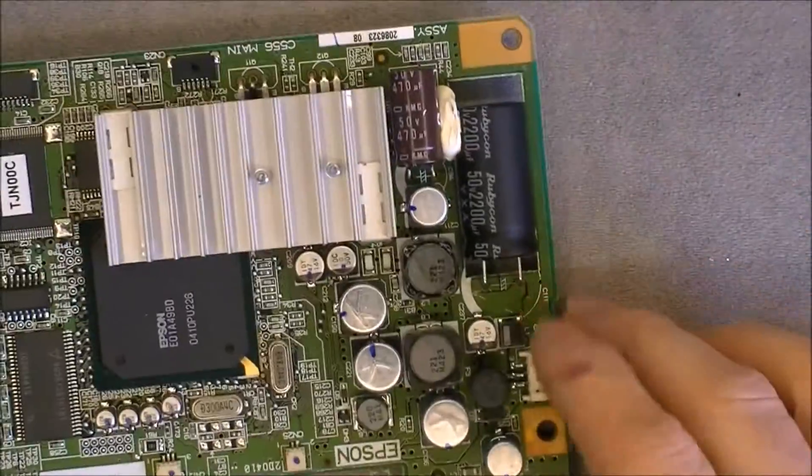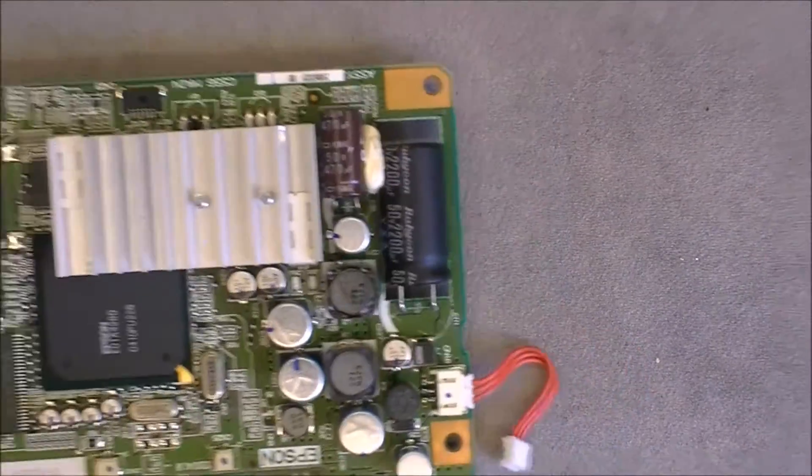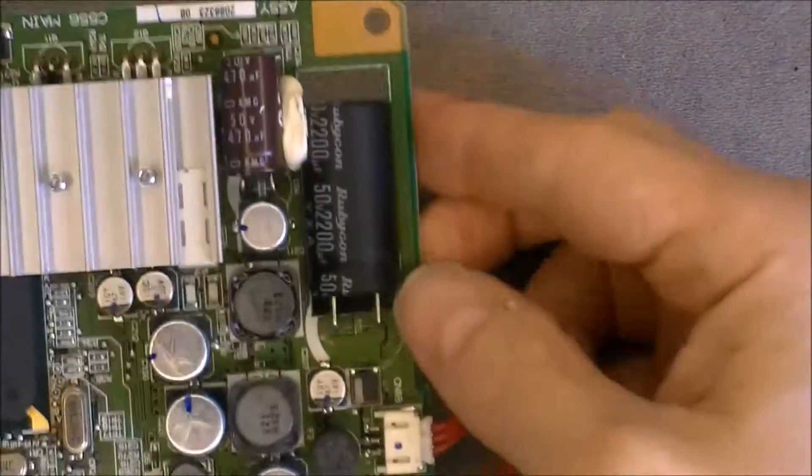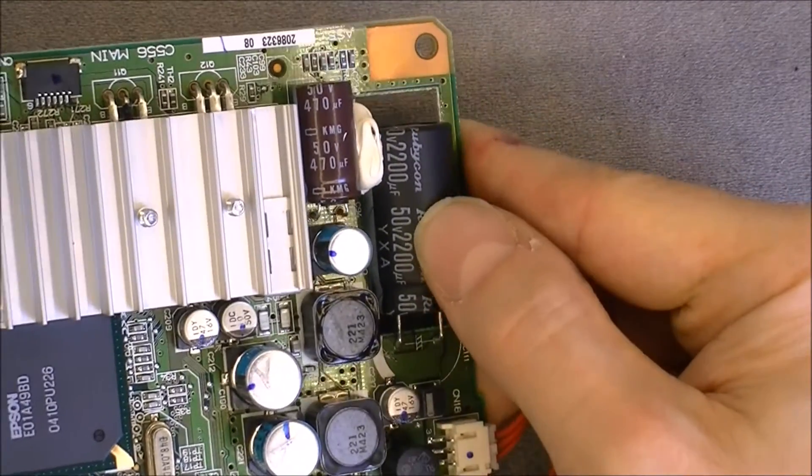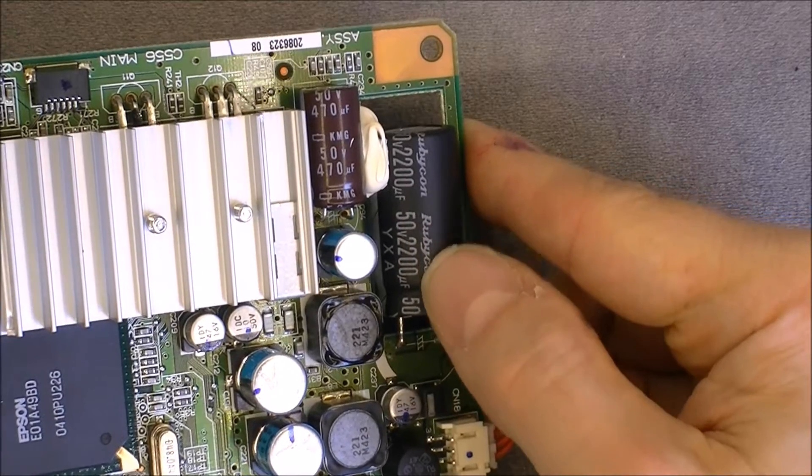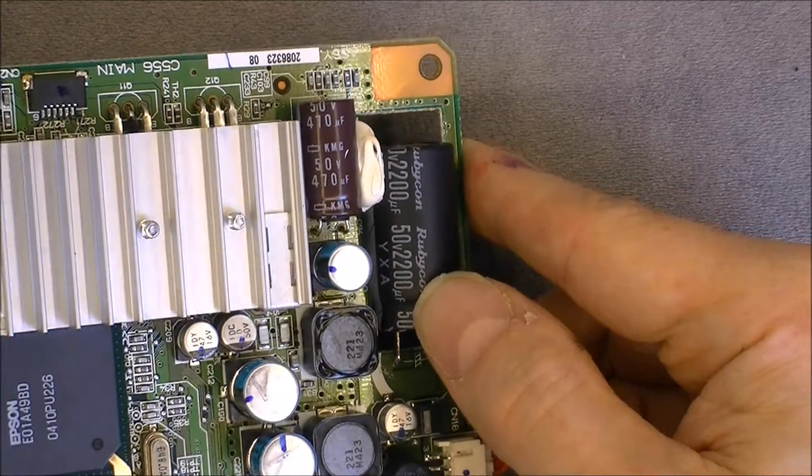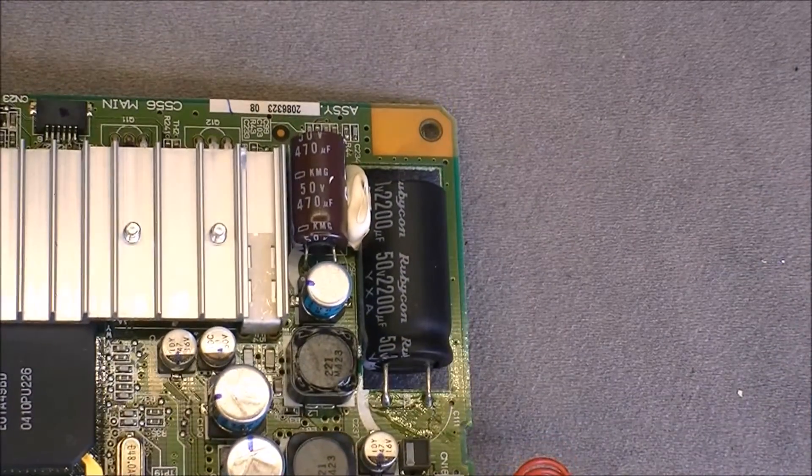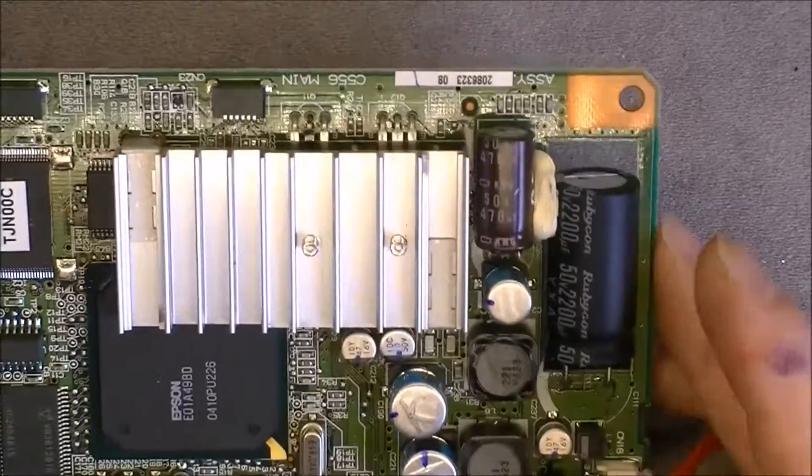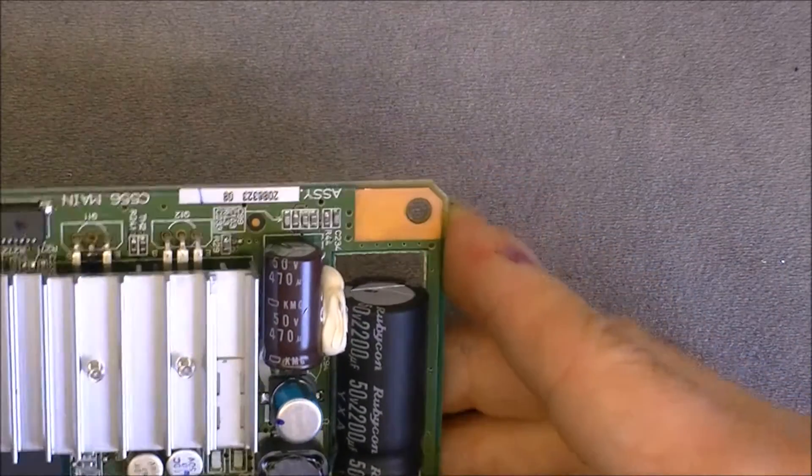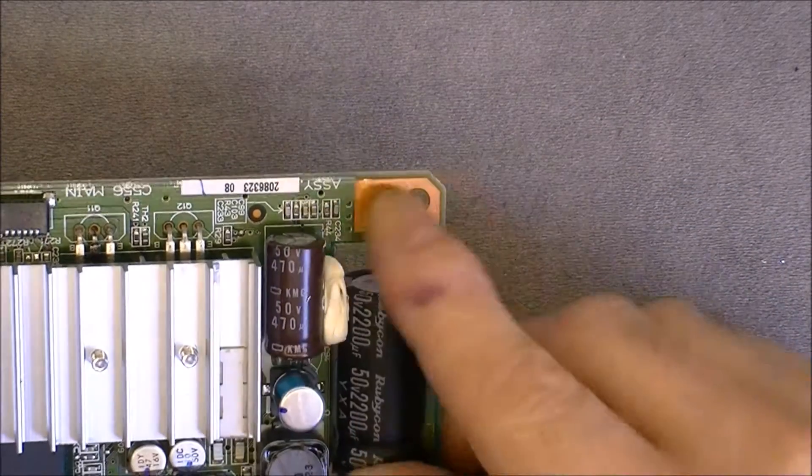Here we have the main circuit board again. As you can see, a pretty serious Rubicon capacitor here, 50 volts at 2200 microfarads. Yes, because the power input is 42 volts, so you need at least 50 volts. Maybe more would be nice. This one is Nippon Chemicon.